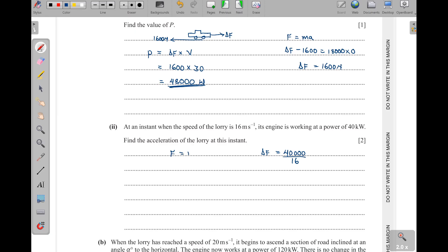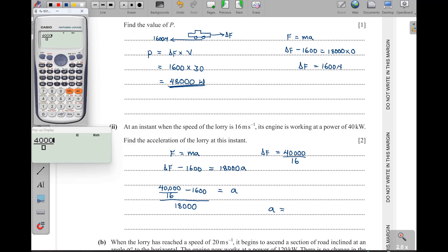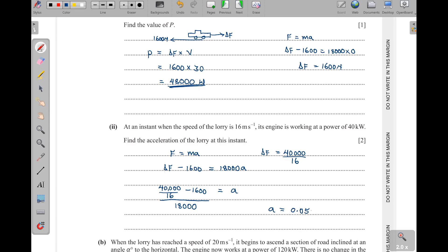Then using F equals MA, driving force minus the resistance force, this one is equal to MA, so 18,000 times A. There is acceleration which we need to find. That means our acceleration here is going to be equal to driving force, which is 40,000 out of 16, then minus 1,600, then divide all through by 18,000 to get the value of A. So we have 40,000 divide by 16, then minus 1,600, then down here we divide by 18,000. This one is giving us 1 over 20, which is 0.05 meters per second squared.